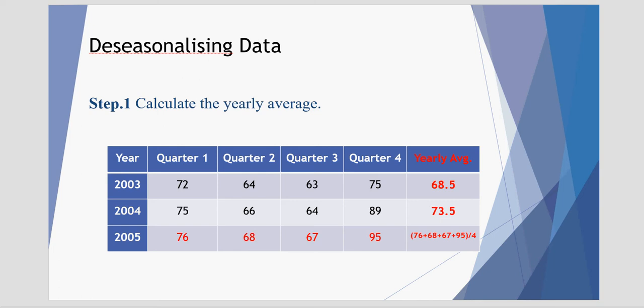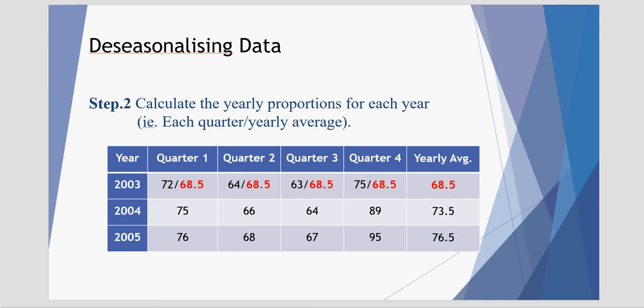In 2005, the same again, we get an average of 76.5. Next we want to calculate the yearly proportions for each year.